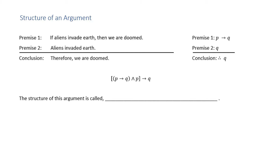Premise two: aliens invaded the earth — symbolically we would write just P. And the conclusion is, therefore, we are doomed — symbolically, therefore Q. To write this full argument — if aliens invade earth, then we are doomed, and aliens invaded the earth, therefore we are doomed — we can write this symbolically as [(P → Q) ∧ P] → Q.